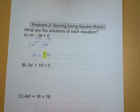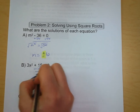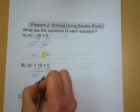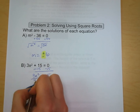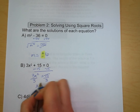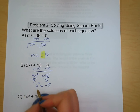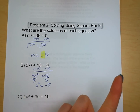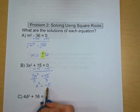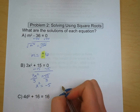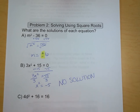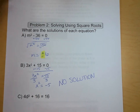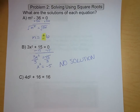For the next equation, subtract 15 from both sides to get 3x squared equals negative 15, then divide by 3 to get x squared equals negative 5. We need to take the square root of negative 5 — but wait, there is no number that multiplies by itself to give a negative result. So this problem has no solution. If we graphed this, the parabola opens up and is shifted up 15 units, so it never crosses the x-axis.